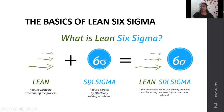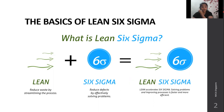Six Sigma will reduce the defects. So both of them together — Lean will accelerate Six Sigma. It will solve the problem, improve the processes, and make the process faster and more efficient. That is the comprehensive toolset of Lean Six Sigma.